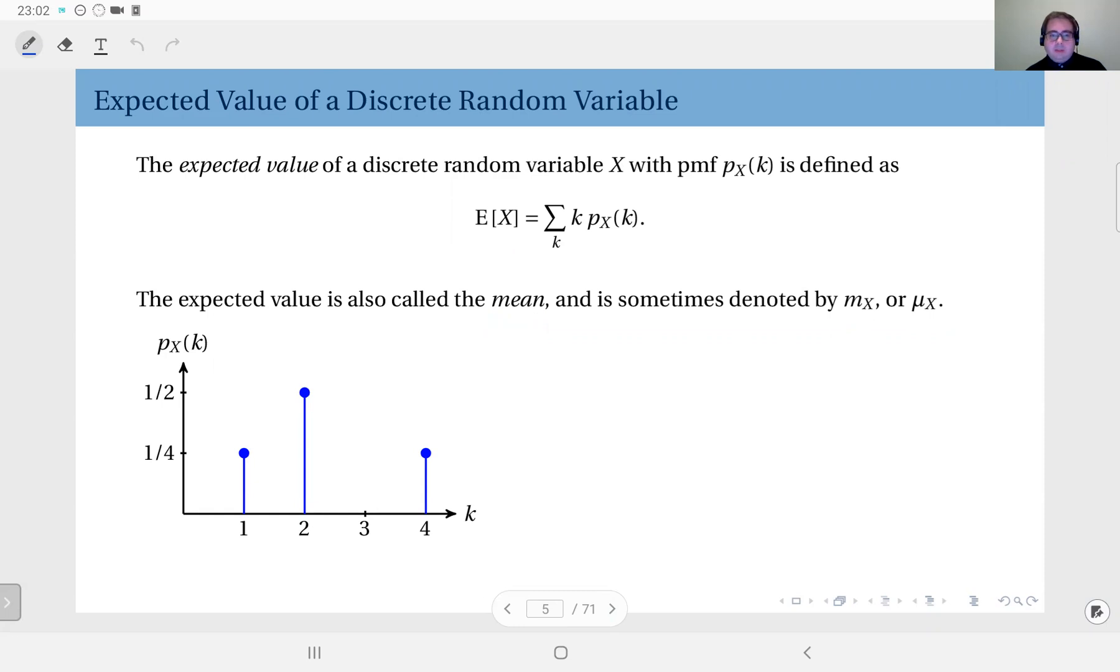Let's say here we have an example discrete distribution. We have one-quarter probabilities at one and four, and one-half probability at two. Let's represent this with corresponding masses on a one-dimensional plane. We have a mass of one-quarter here, a mass of one-quarter here, and a mass of one-half here. Effectively, what the expected value means is the center of mass with respect to this distribution of masses.